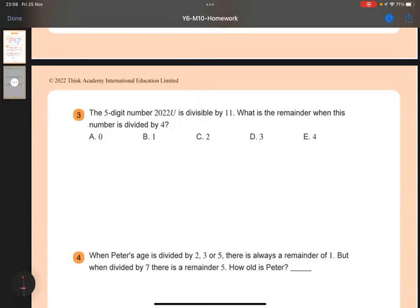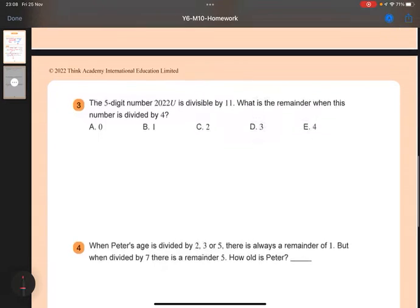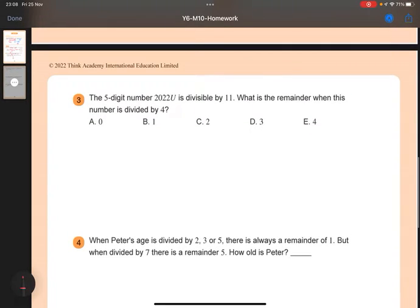So we know it is divisible by 11, and this information will help us determine the value for u. So 2022u. Recall the divisibility rule for 11 is that we start from the unit's digit, we take the sum of alternating digits.